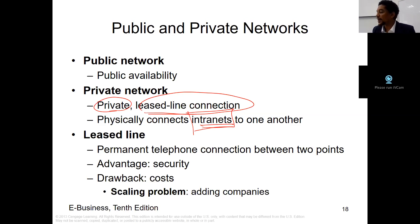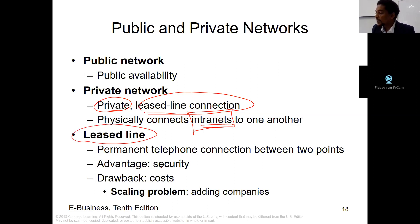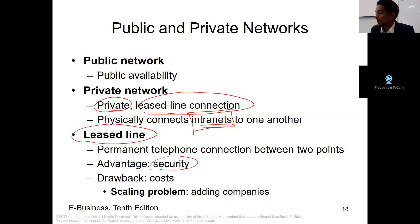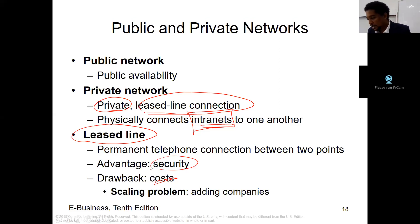A leased line means a permanent telephone connection between two points. The advantage is that when you have your own leased line, since it is not public, the security is very high — nobody can tap into your connection. The drawback is cost: you have to pay money to get the leased line, and there is also a scaling problem when adding other companies.